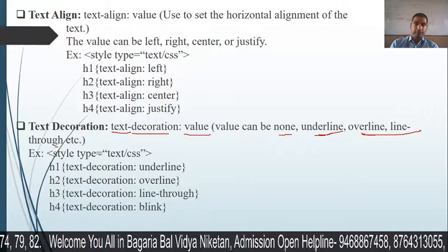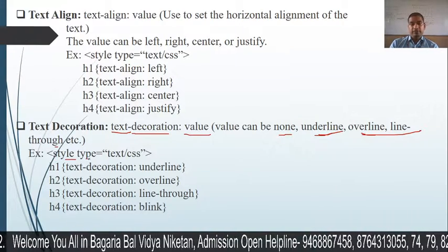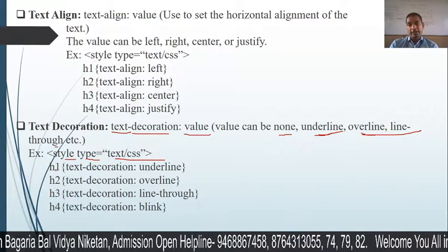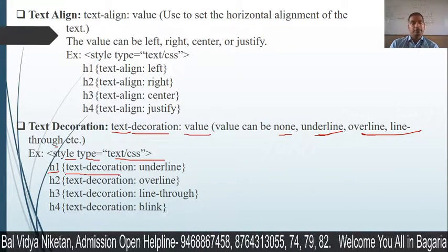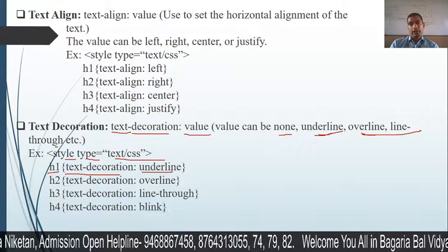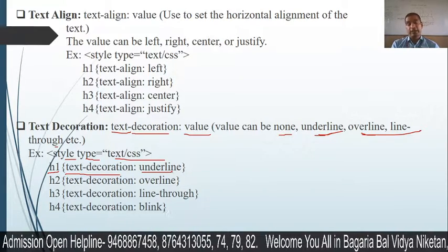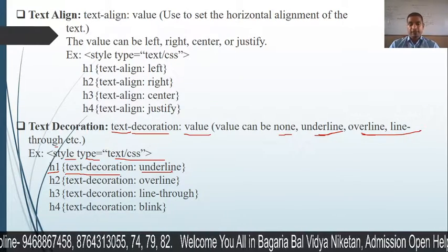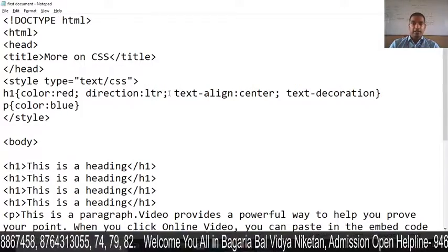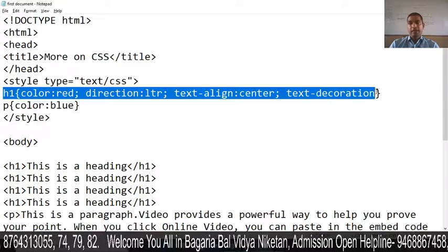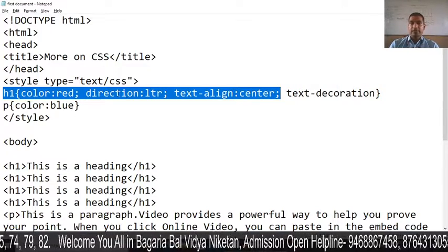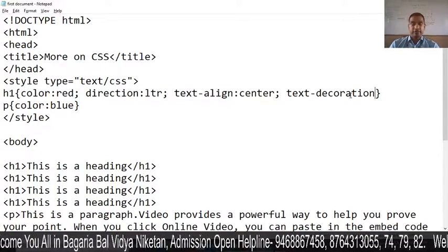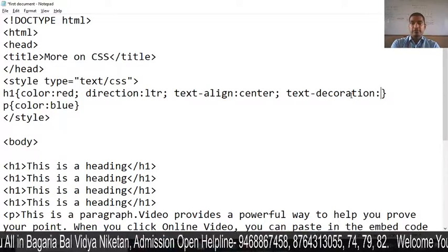Let's look at an example. First we have a style tag with type text/CSS. Suppose we want heading H1 to be underlined — we write H1, then text-decoration, then underline.